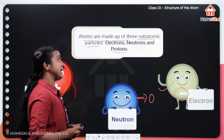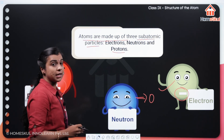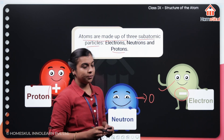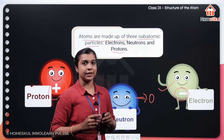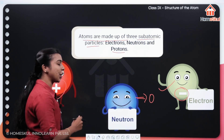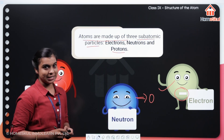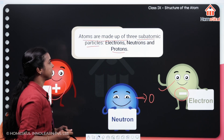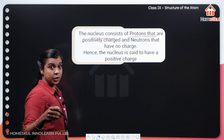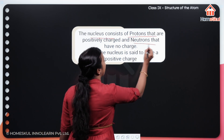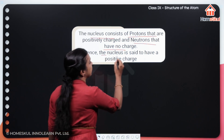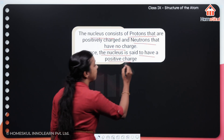So, what did we learn? We learned that an atom consists of three subatomic particles: electron, proton and neutron. Electrons are negatively charged. Protons are positively charged. And your neutrons are chargeless. The nucleus consists of protons that are positively charged and neutrons that have no charge at all. Hence, the nucleus is said to have a positive charge.